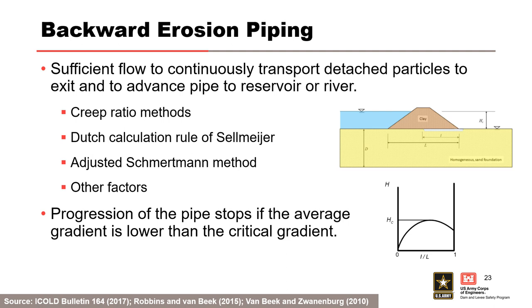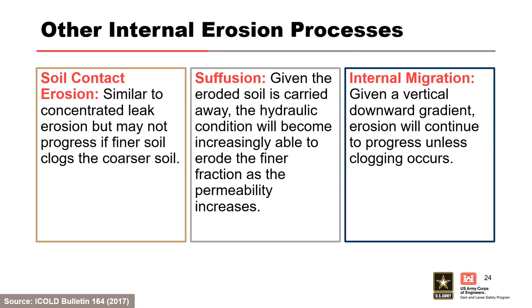For backward erosion piping, there is a critical gradient above which the particle is detached—this is an exit gradient consideration—and there is also a critical flow velocity above which the soil particles will be transported in the pipe, which is an average or global gradient consideration. Backward erosion piping is the only internal erosion process where the hydraulic condition for progression is evaluated; three methods were discussed during this training. Progression of the pipe stops if the average gradient is lower than the critical gradient. The hydraulic condition for progression of soil contact erosion is similar to concentrated leak erosion, but erosion may not progress if finer soil clogs the coarser soil. For suffusion, given the eroded soil is carried away, the hydraulic condition will become increasingly able to erode the finer fraction as the permeability increases. For internal migration, given a vertical downward gradient, erosion will continue to progress unless clogging occurs.